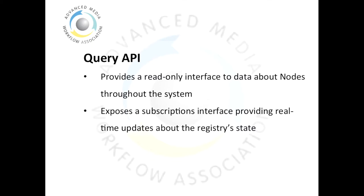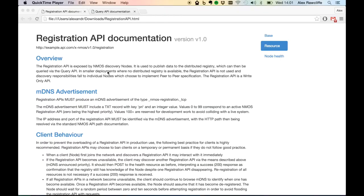Nodes and other browsing interfaces are capable of finding out information about all of the other nodes and the resources they expose in the system. The query API provides HTTP-accessible endpoints, but additionally a WebSocket-accessible endpoint in order to provide a live view of what is going on in the system and the registry state. The registration API produces an MDNS advertisement onto the network, advertising its presence.